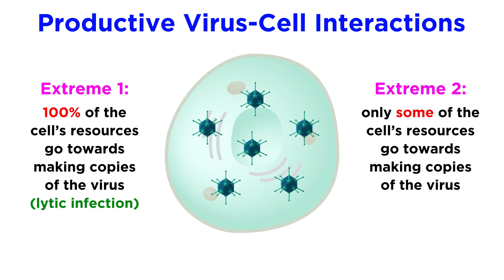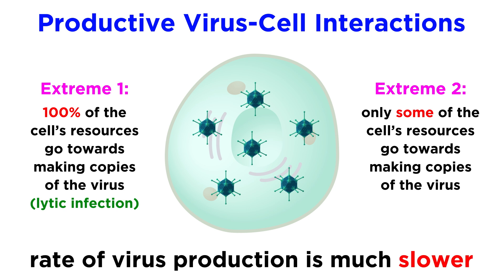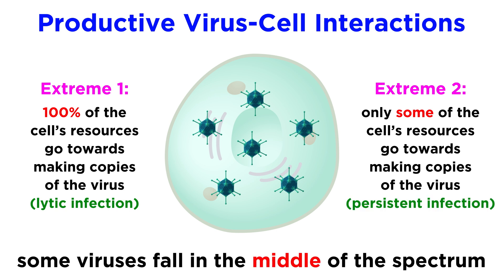On the other end of the spectrum, the cell is continually making viruses, but it doesn't divert as much of the cell's resources. This keeps the cell alive, with the rate of virus production being much slower. This is called a persistent infection. Some viruses fall somewhere in the middle of this spectrum, depending on what is optimal for the lifestyle of the virus.